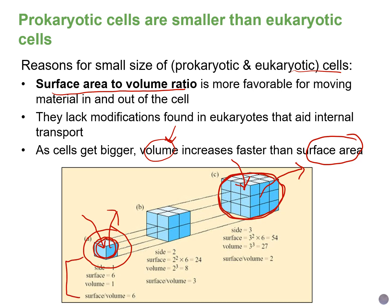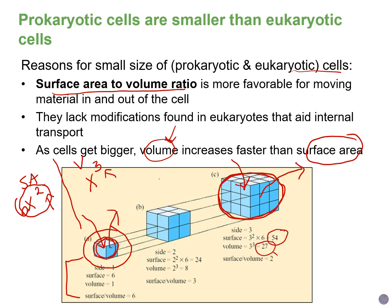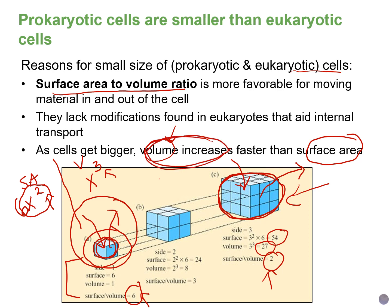The surface area for a cube with side length X would be X squared times six sides, and the volume would be X cubed. Looking at cubed versus squared, as cells get bigger the surface area increases slowly compared to the volume — so the surface area to volume ratio decreases for bigger cells. Smaller cells are more favorable; they can transport things in and out quickly, whereas big cells cannot — they're limited by their surface area, even though they have greater need for nutrients and greater generation of wastes.